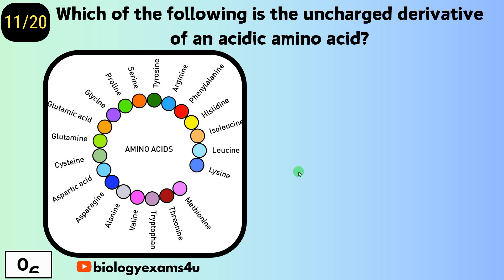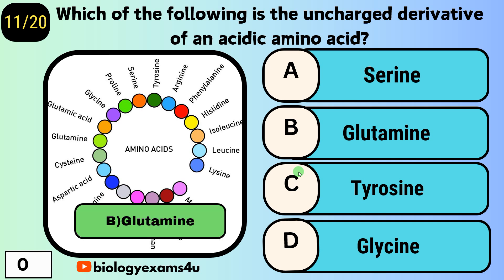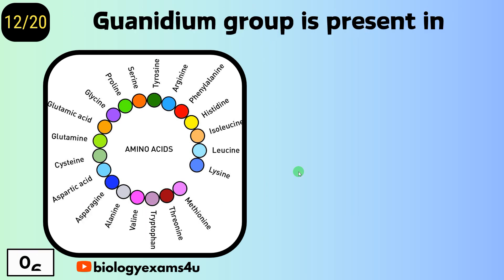Question number eleven: which of the following is the uncharged derivative of an acidic amino acid? Option A, serine; option B, glutamine; option C, tyrosine; option D, glycine. The answer is glutamine.